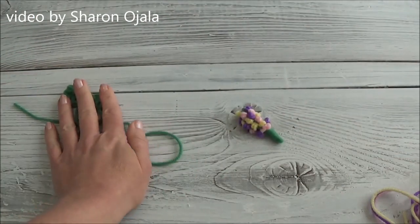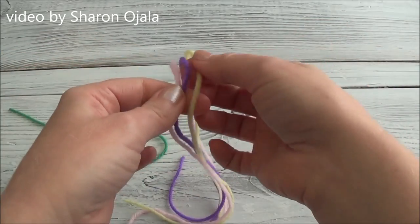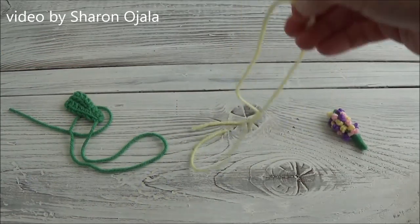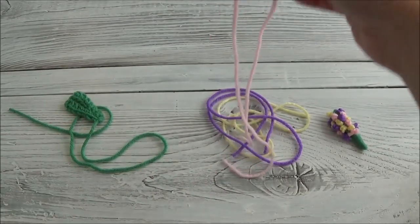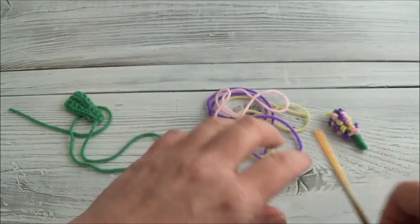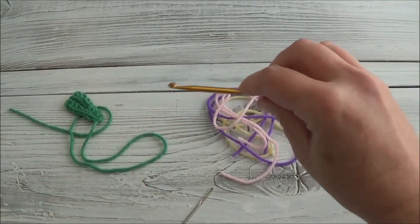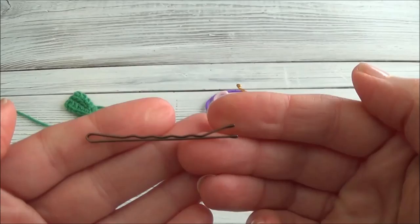You don't need very much, so you can use dark green or light green. Then for the flowers themselves, I just cut three strands, these are about 24 inches long, of yellow, purple, and pink. You'll need your blunt end yarn needle, your crochet hook of course.